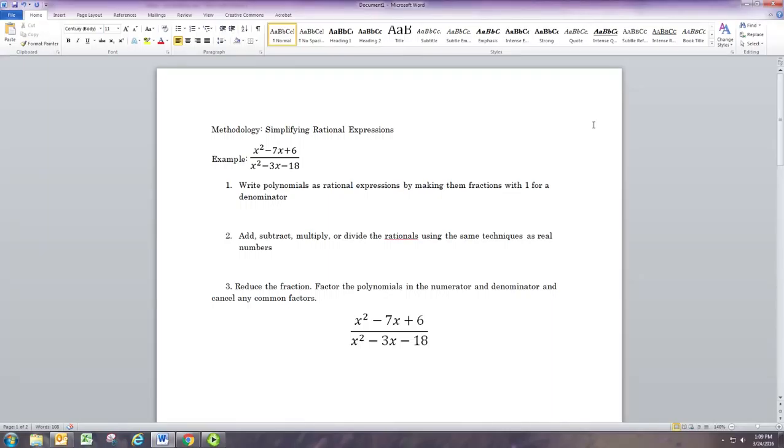The first one, we have this rational expression with x squared minus 7x plus 6 in the numerator, and x squared minus 3x minus 18 in the denominator.